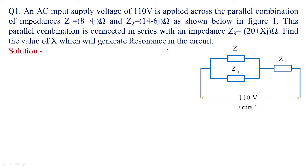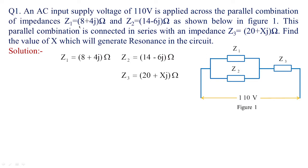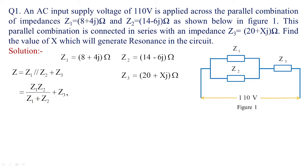By looking into the network, first write down the values of impedances. Z1 is 8 plus 4j, Z2 is 40 minus xj, and Z3 is 20 plus xj. This parallel combination is in series with Z3, so the total impedance of the circuit will be Z = Z1 parallel to Z2, plus Z3, which equals Z1·Z2 divided by Z1 plus Z2, plus Z3.